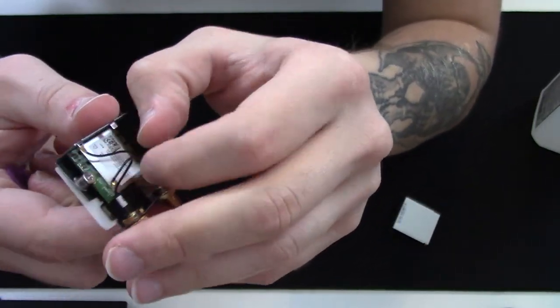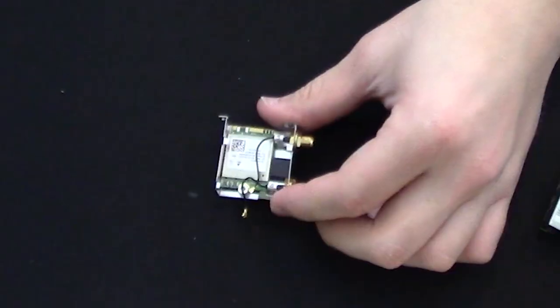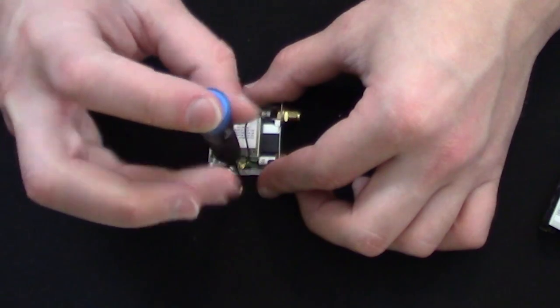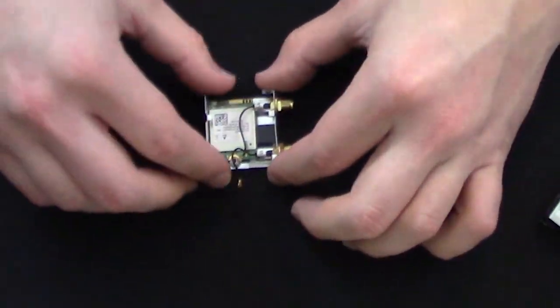Pull the antenna cables out of the way so as not to damage them. Unscrew the PCB from the housing, and bend the housing outward to pull away the parts holding the PCB in place.